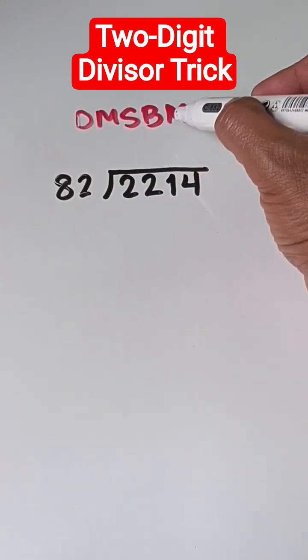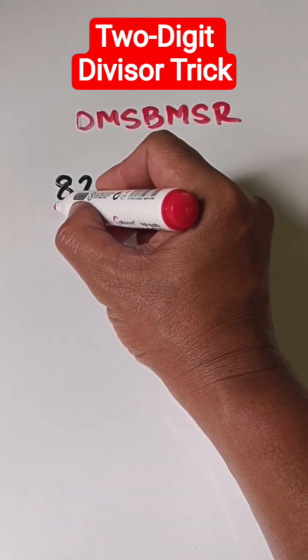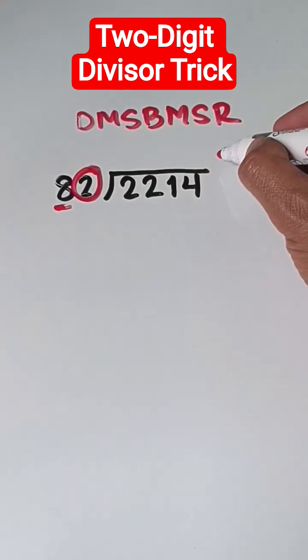Divide, multiply, subtract, bring down, multiply, subtract, and repeat the process. So, 8 will be our divisor and 2 will become our multiplier.